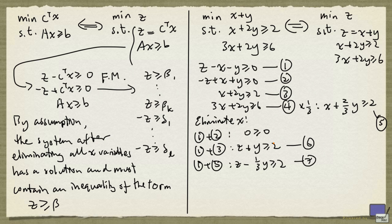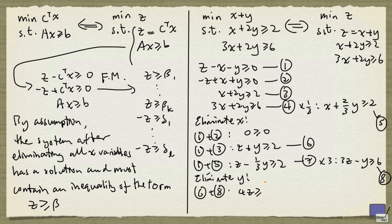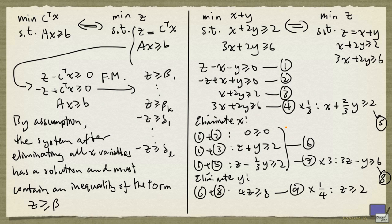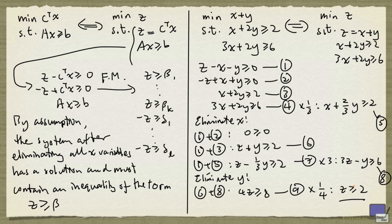Now we want to eliminate y. Again, we want the coefficients of y to be 1, minus 1, or 0. To do that, we multiply inequality 7 by 3, giving us 3z minus y ≥ 6, labeled 8. Now we eliminate y and get 4z ≥ 8, labeled 9. Multiplying inequality 9 by one quarter gives us z ≥ 2. So the optimal value for this linear programming problem is 2. We can set z equal to 2, go back to the system, and solve for a value of y satisfying all the inequalities. Once we have y and z, we can solve for x. So we get a solution with objective function value equal to 2. This inequality also tells us that there is no solution with z less than 2, so this is the optimal value.